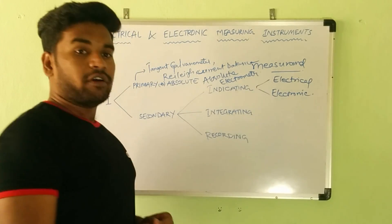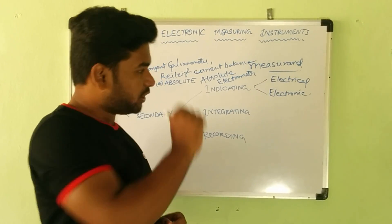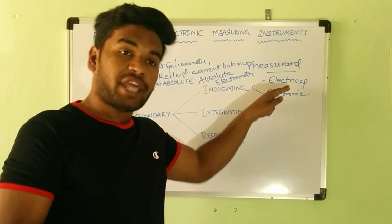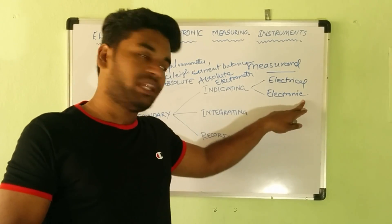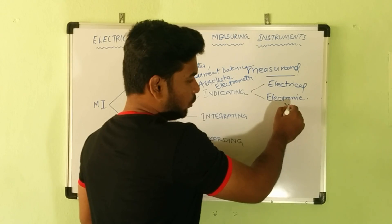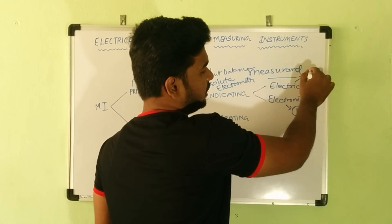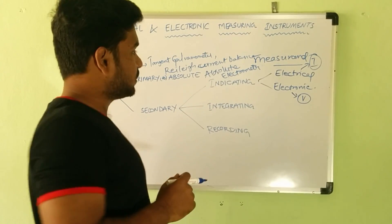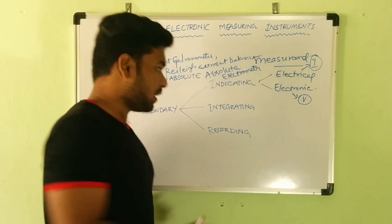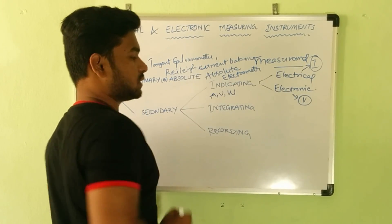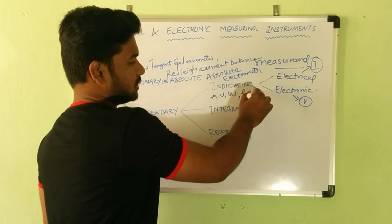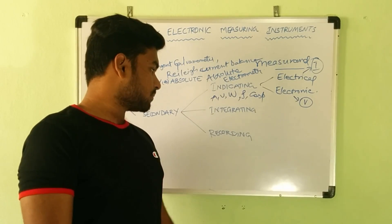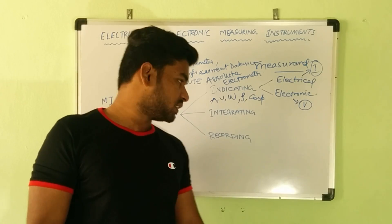One important point to note: in electrical indicating instruments, the actuating quantity is current, whereas in electronic measuring instruments the actuating quantity is voltage. The actuating quantity is the quantity responsible for activating the measuring instrument. Examples of indicating instruments are ammeters, voltmeters, wattmeters, frequency meters, and power factor meters.